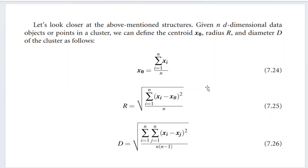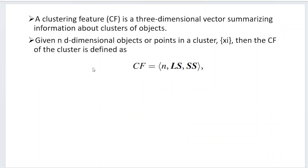A few important terminologies: given n d-dimensional data points in a cluster, we define the centroid x0 with its corresponding equation. The radius is calculated using its equation for a given cluster, and the diameter is calculated using its own equation. The cluster feature is represented as the triple CF = (n, ls, ss).